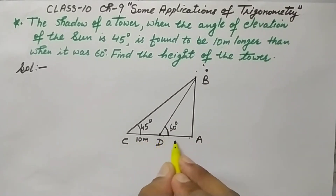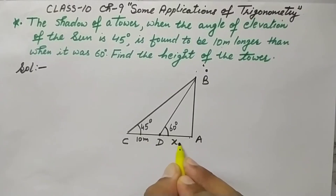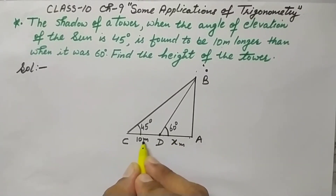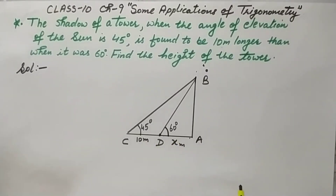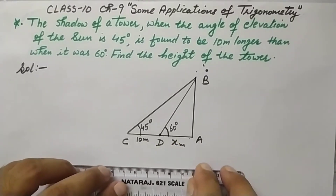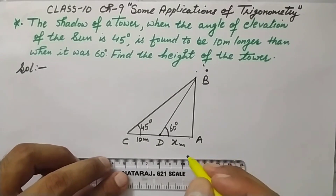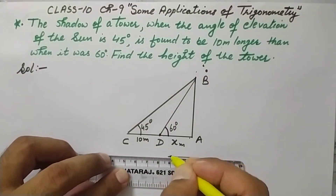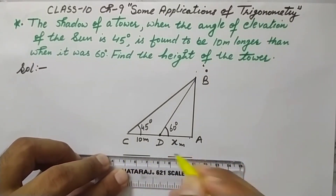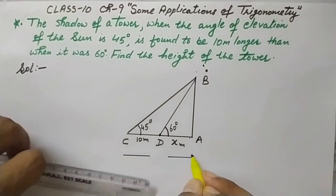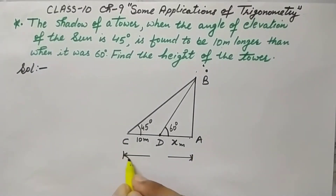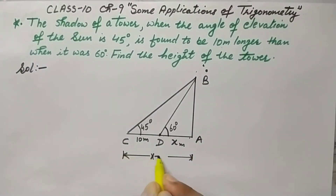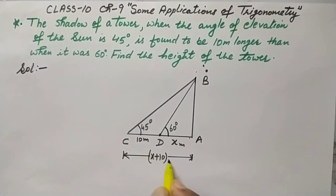Suppose AD distance is X meters. CD distance is 10 meters given. So total AC distance will be X plus 10 meters. This is the AC shadow distance — X plus 10 meters.